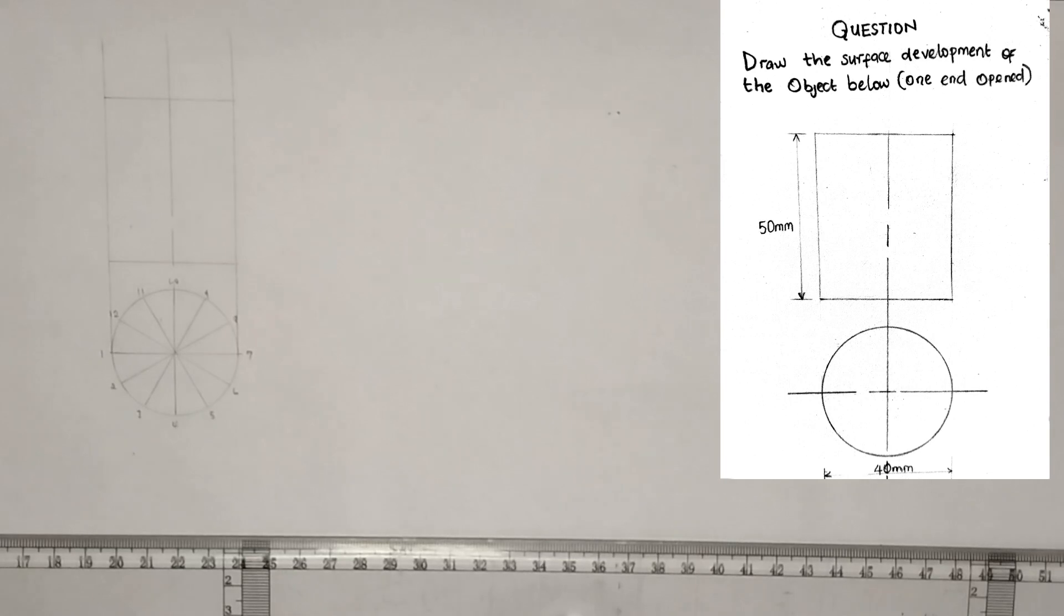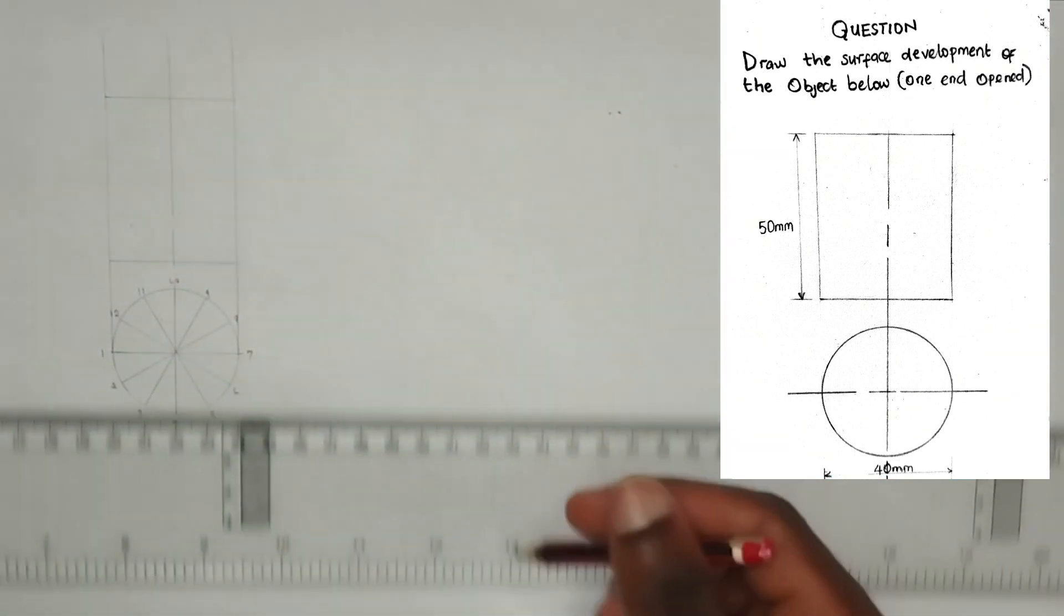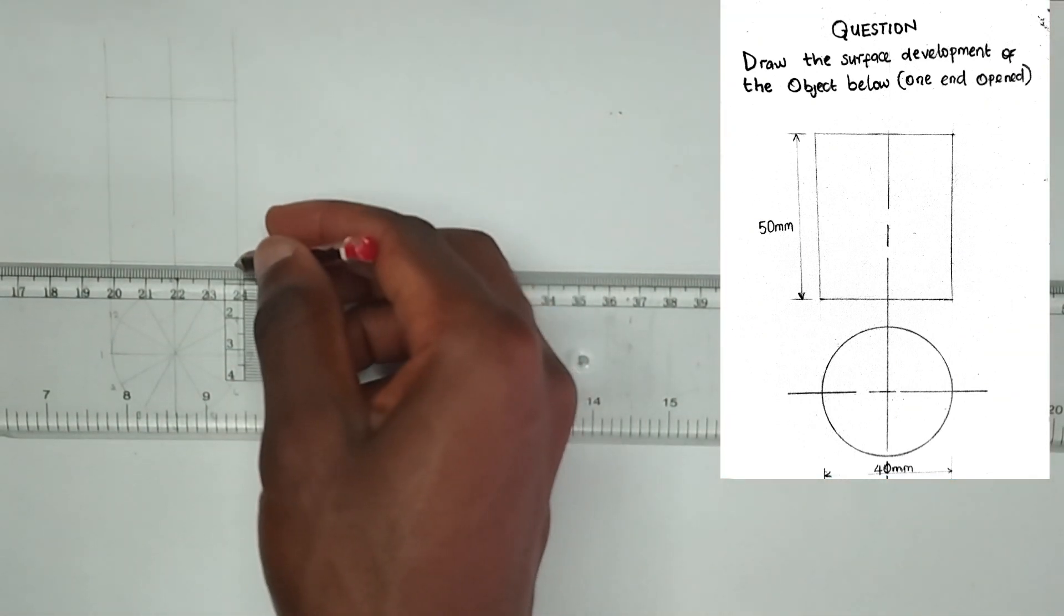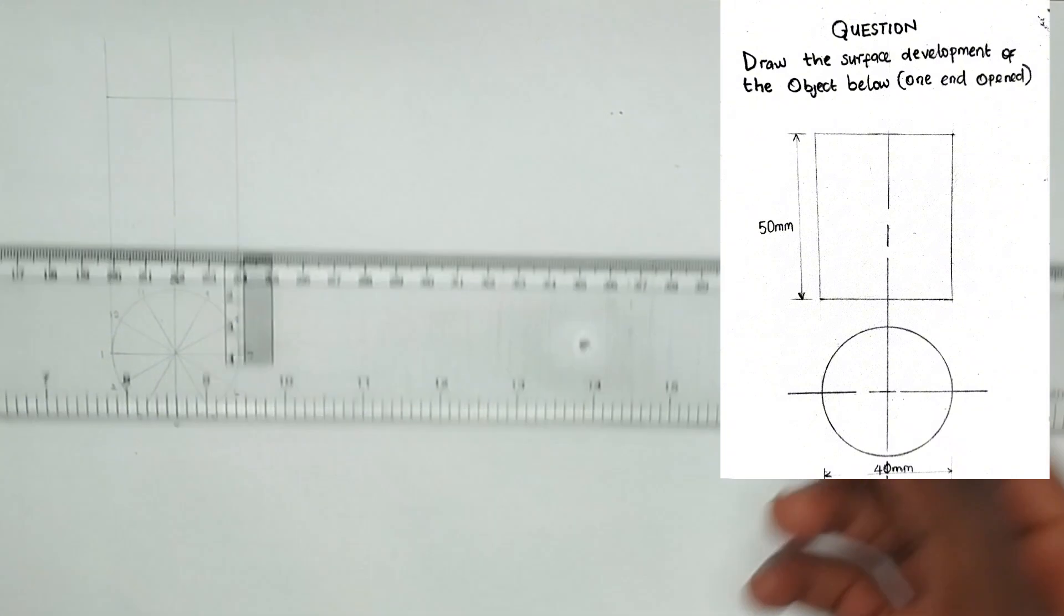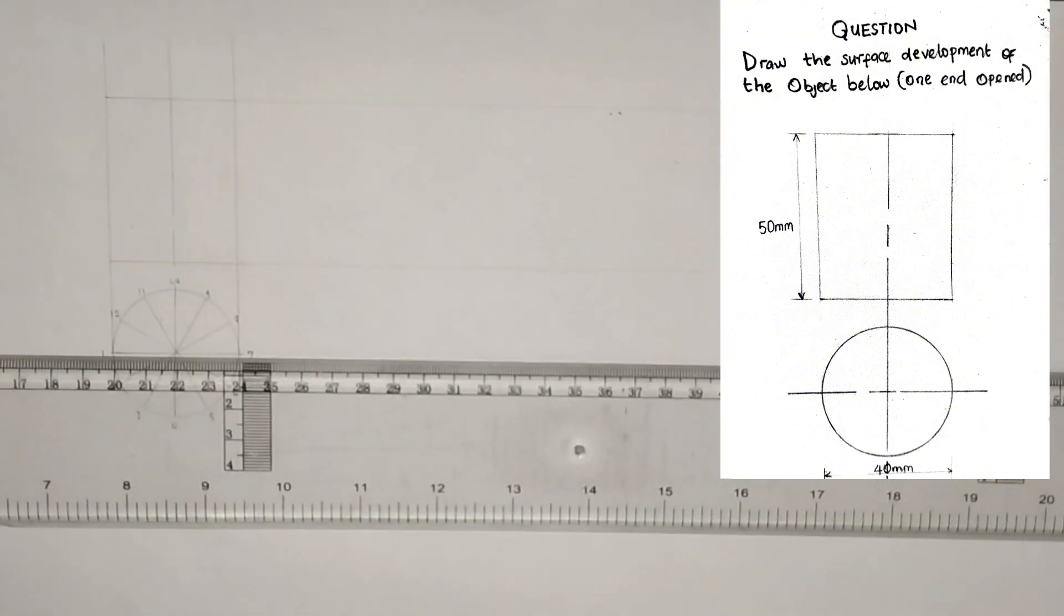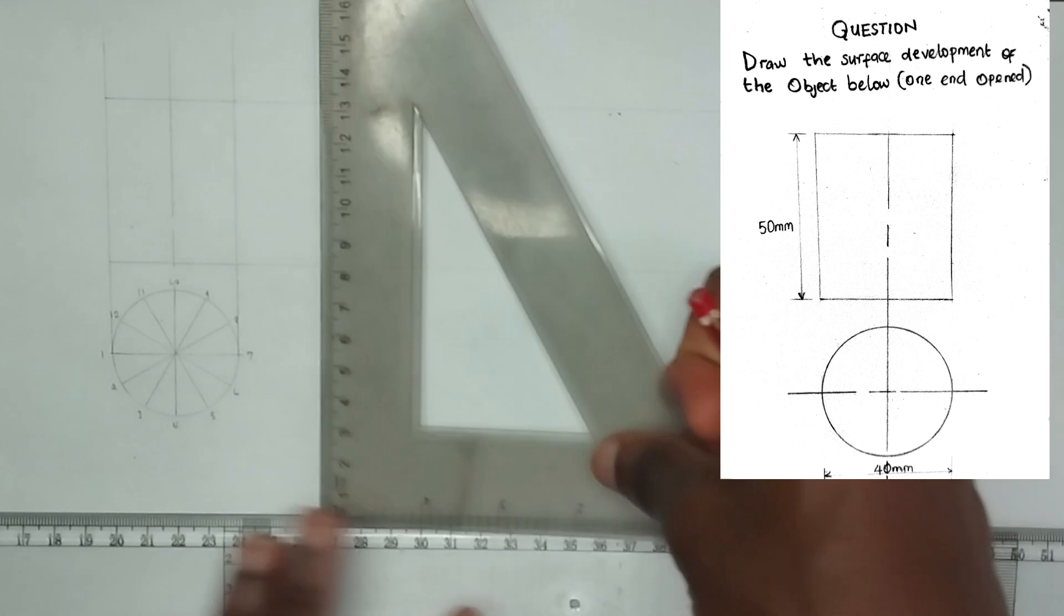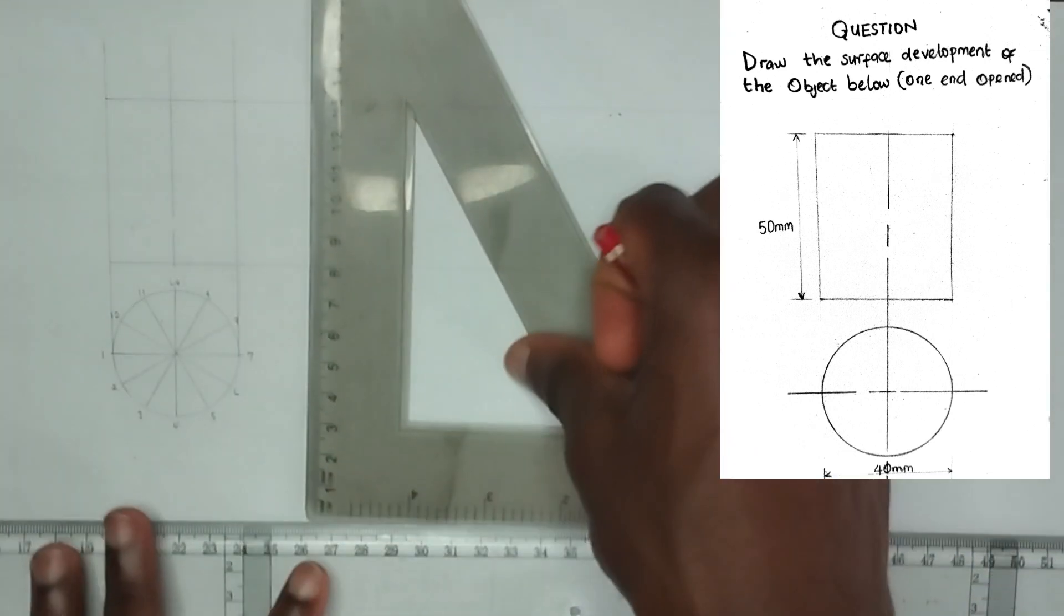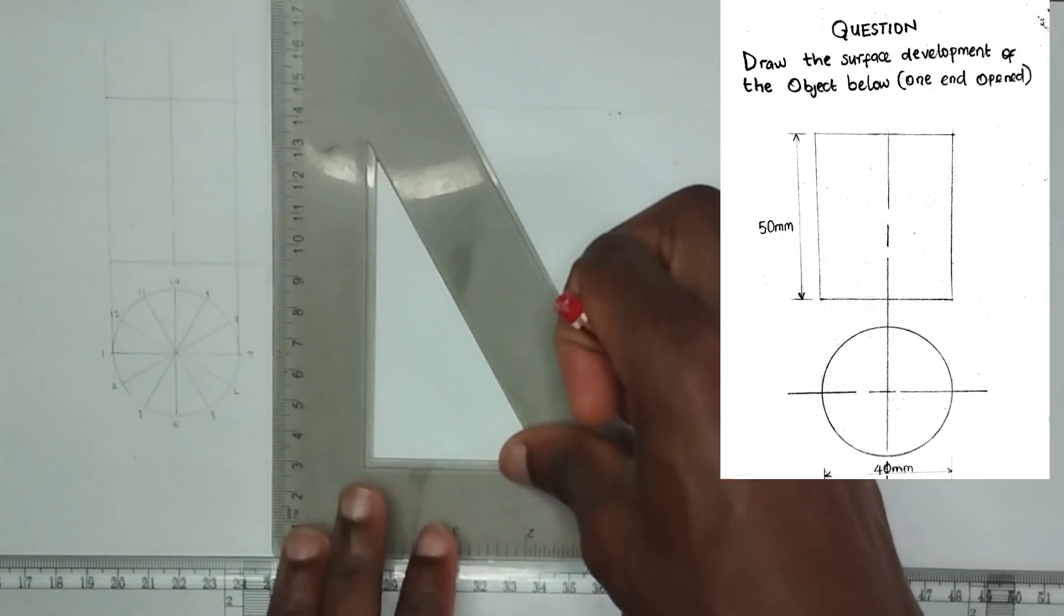Okay, so now the next thing to do is to project this line from the front view of the cylinder sideways. We are going to project it horizontally towards the side. Then at any point also, just make sure it is not too large and not too small, I'll draw my straight vertical line like this.